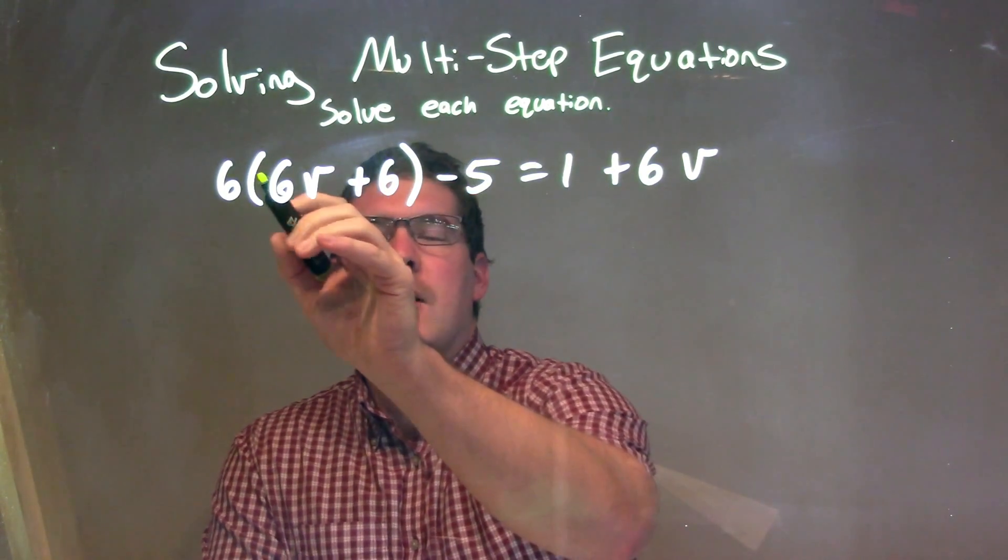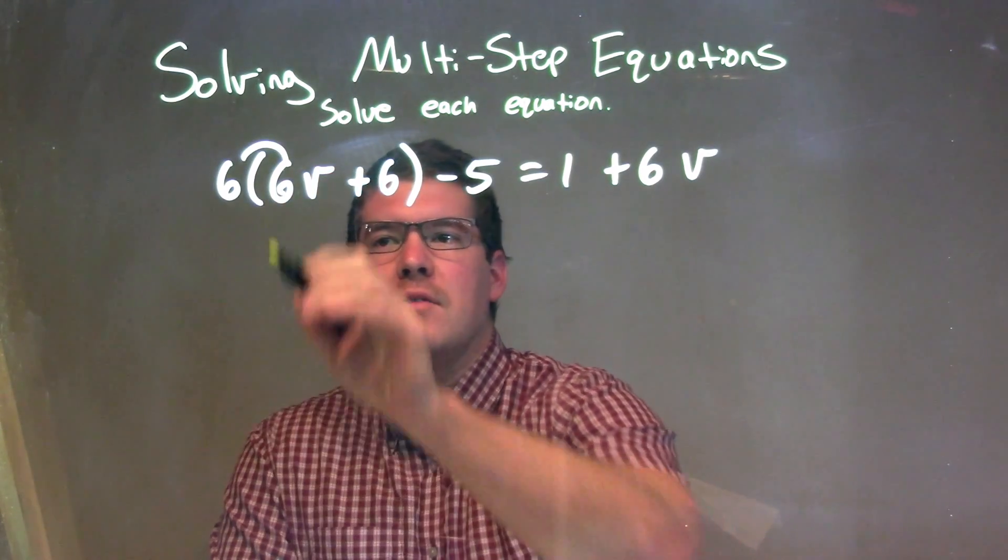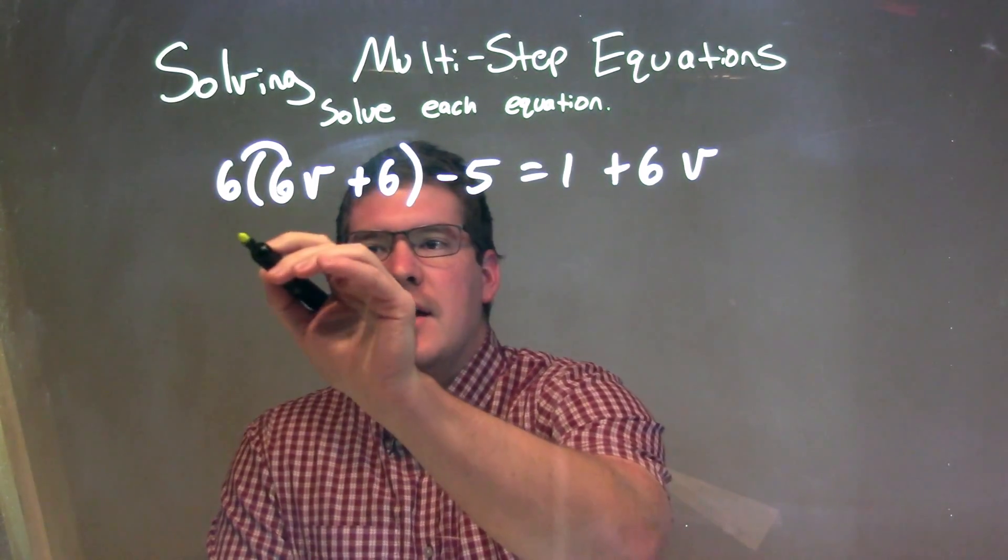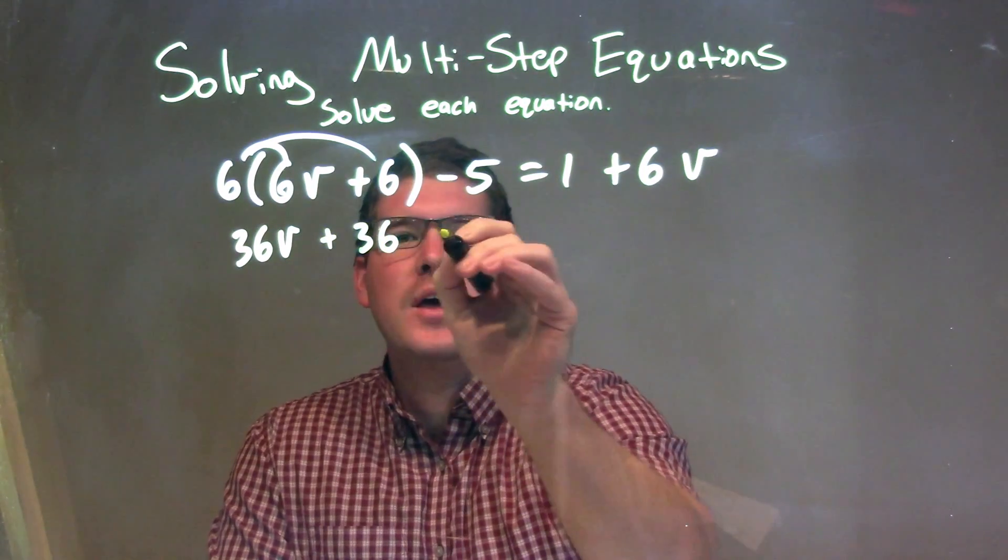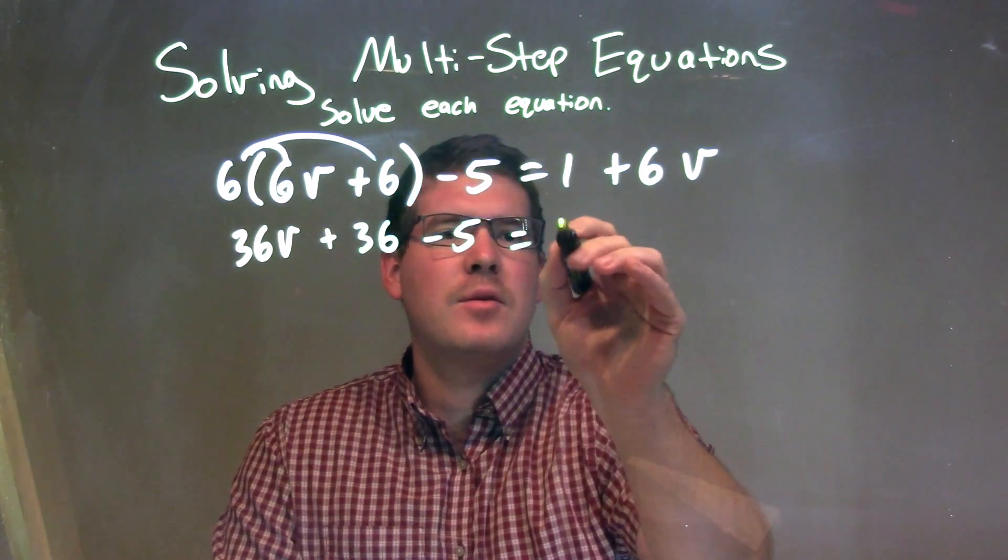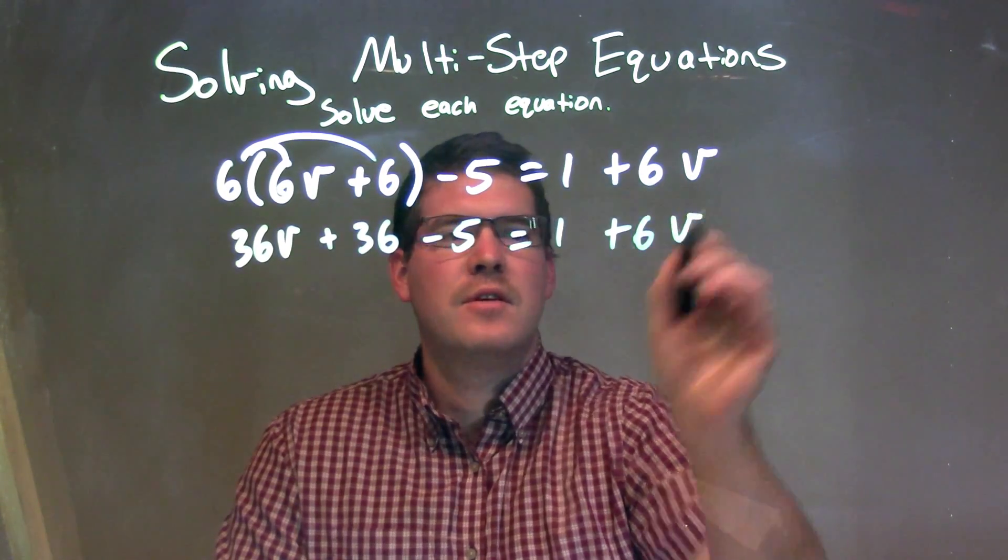So, to do that, I multiply or distribute the 6 to both parts. 6 times 6V is 36V, and 6 times 6 is 36. We have a minus 5 right here, and that's equal to 1 plus 6V.